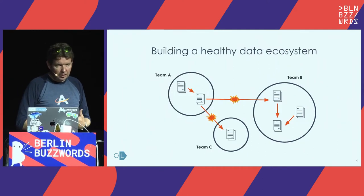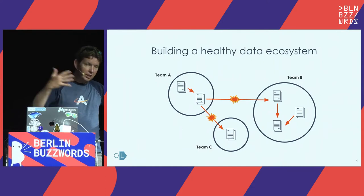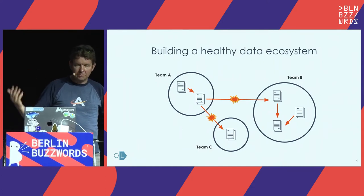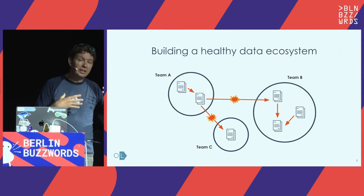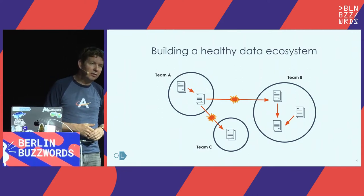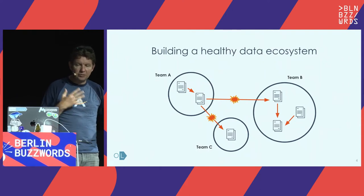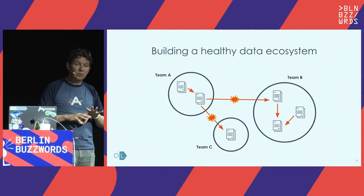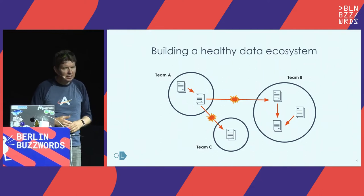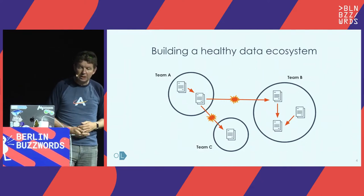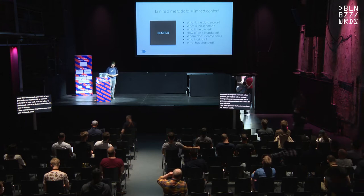The reason we need lineage is because when you try to build a data ecosystem, when an organization grows — whether it's a company or any sort of organization with teams that consume and produce data — typically inside each team's bubble, people have a very good understanding of how they consume and publish data. But as soon as we go across teams and outside of their bubble, that's where a lot of friction happens because people have very little visibility on where the data is coming from or who's consuming it.